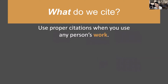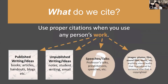Use proper citations when you use any person's work. There are different things people may assume about what you can or do not need to cite. You need to cite published writing and ideas — books, articles, handouts, blogs. Even if you're not using their exact words but are using their ideas, you do need to cite that. You also need to cite unpublished writings and ideas — even if it's not published, you still need to cite it, especially because it's not your own.